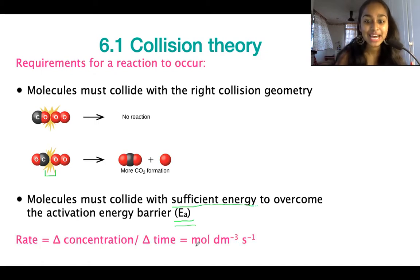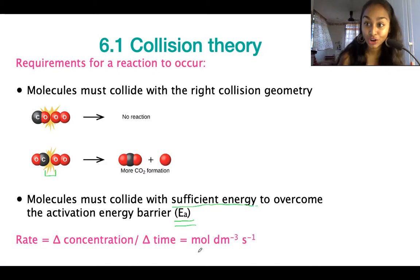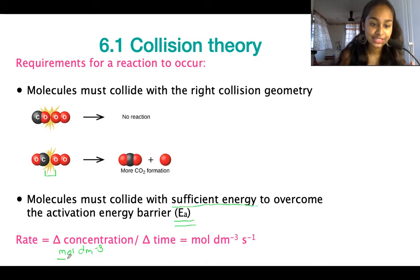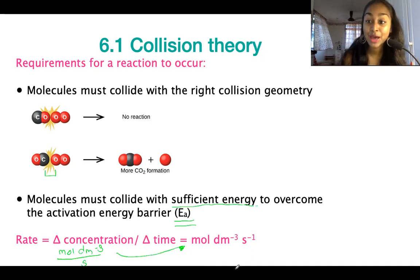Next, let's look more in depth at rate. In terms of the definition, rate is the change in concentration over the change in time. The unit for concentration is moles per decimetres cubed, and the unit for time is seconds, so dividing concentration by time gives us the unit moles per decimetres cubed per second.